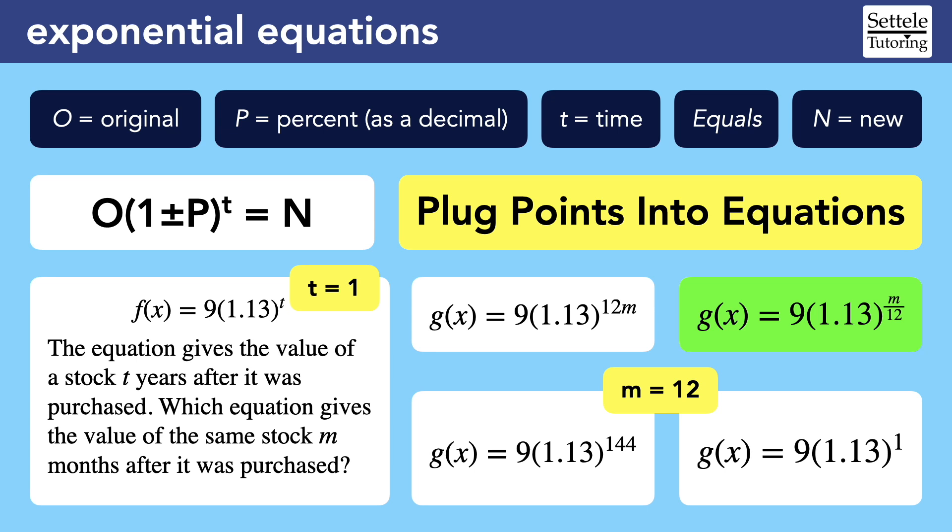If we had just followed our instincts, it might make more sense to multiply 12 and m in the exponent, because that's how we find the number of months in a year. 1 year is 12 months, 2 years is 2 times 12 months, so 24, 3 years is 36, and so on.